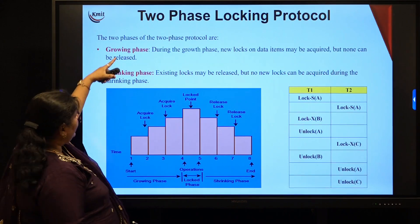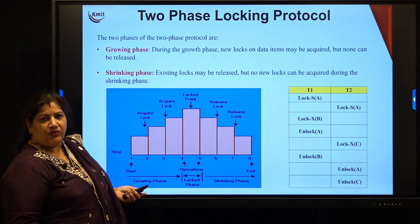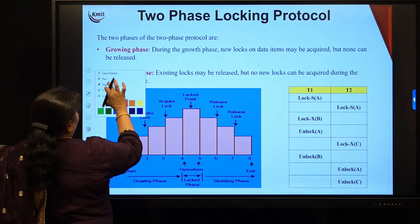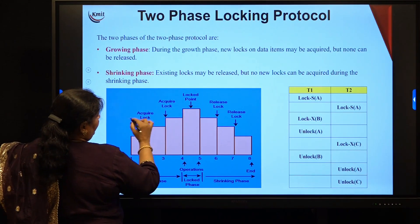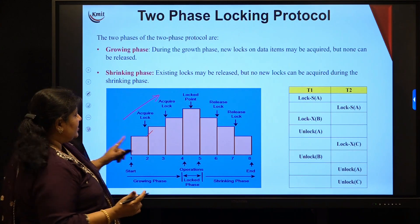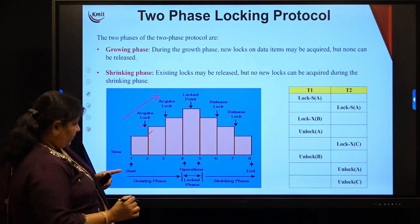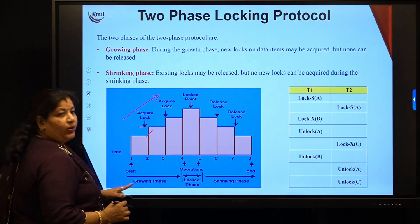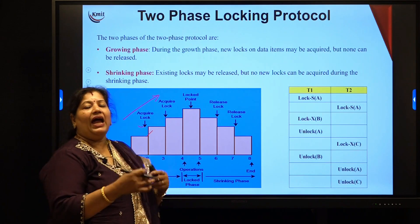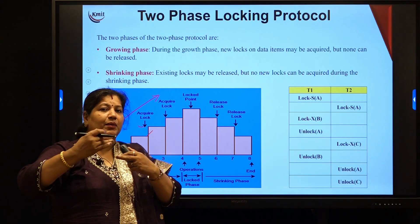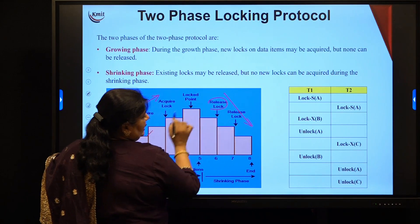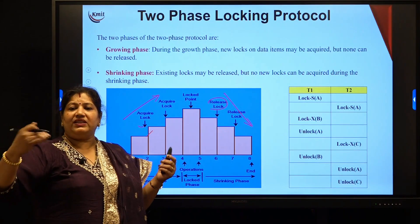In a two-phase locking protocol, there are two phases: the growing phase and the shrinking phase. In the growing phase, the transaction acquires all the locks — it is growing. As it continues execution and performs the transaction, it acquires all the required locks. From step one to three it is the growing phase. Once it has acquired all the required locks, it continues at the locked point and performs all the operations. As it completes the operations on the data item, it starts releasing the lock.